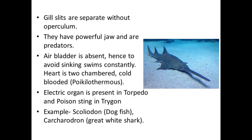Heart is two-chambered. They are cold-blooded, that is poikilothermic — they don't have a fixed body temperature and change it according to the environment. Electric organ is present in Torpedo and poison sting in Trygon. Examples include Scoliodon, Carcharodon, etc.